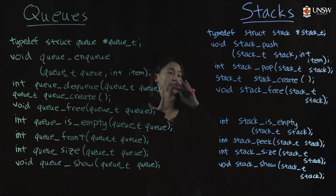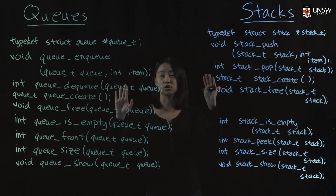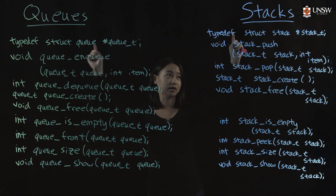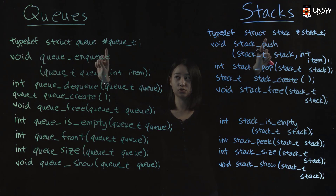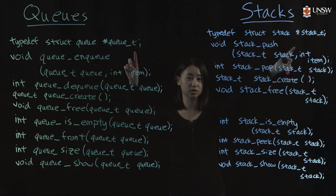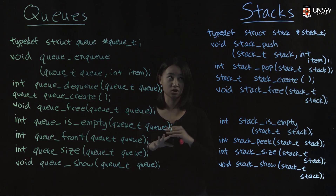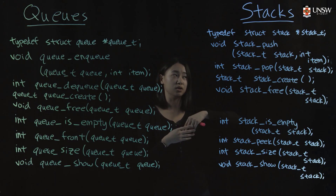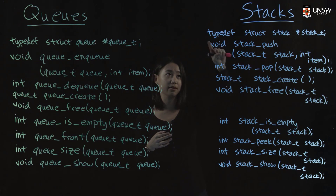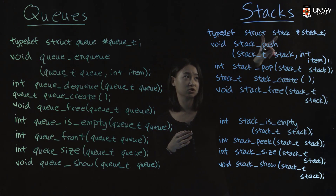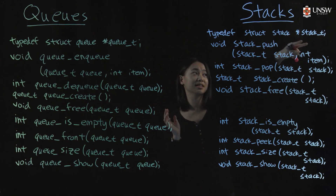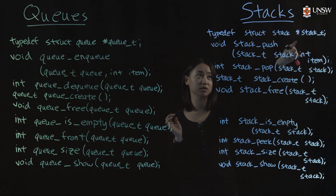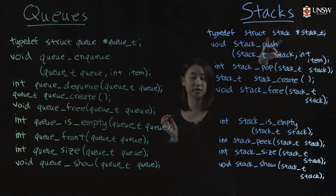The first thing we need to do is typedef the structs that represent stacks and queues as pointers, since the user doesn't need to know what's inside the struct — they just need to have a reference to it. So we have typedef struct stack, stack_t. In this notation, stack_t is a pointer to a struct stack.